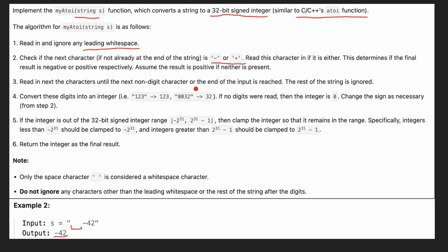The third requirement is that we should only consider digit characters — we stop counting the number when we reach a non-digit character. For example, if we have a white space, then minus 42, then 'abc', we stop at 'a' and return minus 42.